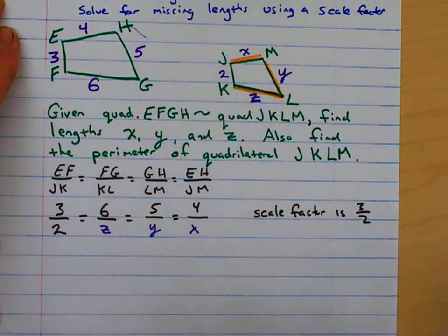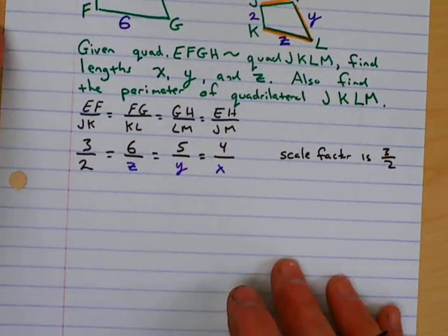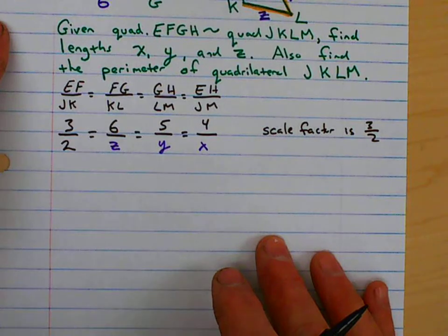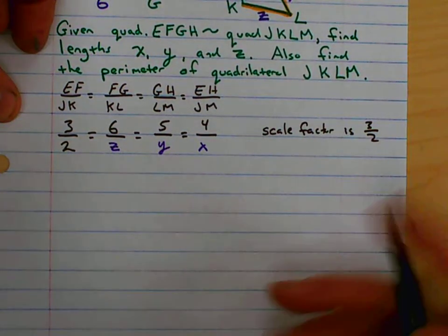If we flipped it, it would be 2 over 3. And we still can find the right answers. We've just got to be consistent, always following the same pattern, not changing up in the middle. And that can throw you off.